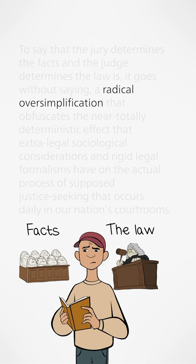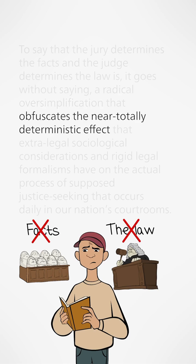So we understand that this whole judge, jury, facts, law thing is too simple. Then we read that this 'obfuscates the near-totally deterministic effect.' That's pretty fancy language, and maybe we don't understand what it means. But it likely has a negative connotation, if only because it comes right after 'oversimplification.' In other words, this radical oversimplification isn't good.